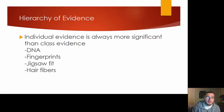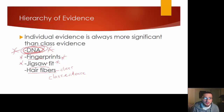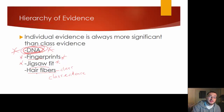You're going to want to know the hierarchy of evidence. DNA is most important. Fingerprints are very important as well because they are individual evidence. Jigsaw fit is also individual evidence. Then we get to hair fibers and so on — this is class evidence, and everything after is going to be class evidence. Still important, but not as important as those three. Hair fibers might be helpful if the hair still has the root, because that root has cells from the scalp we can use for DNA evidence. But many times it's just the hair fiber, and that's class evidence.